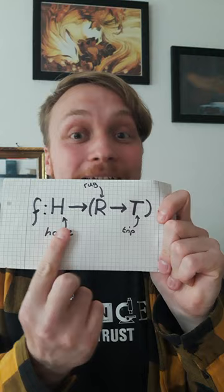Now, in functions this is expressed like this. There's a rule that if there's evidence for me being in someone's home, there's a new rule that says if there's evidence for the rug, I'm gonna trip.